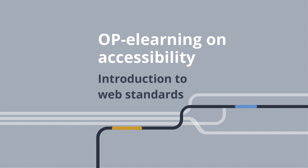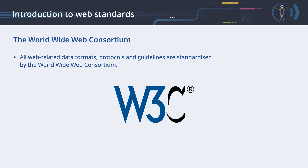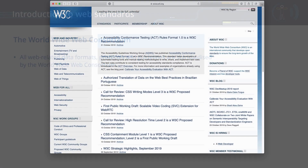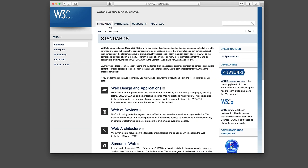Introduction to Web Standards. In this chapter, you will learn how to create accessible web publications. All web-related data formats, protocols, and guidelines are standardized by the World Wide Web Consortium, which is often abbreviated to W3C or the Consortium. The Consortium is an international community where member organizations, a full-time staff, and the public work together to develop web standards.